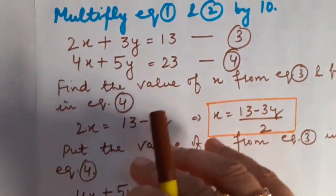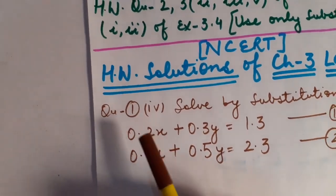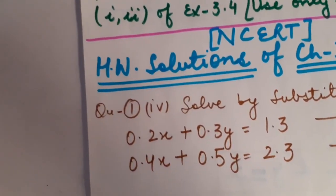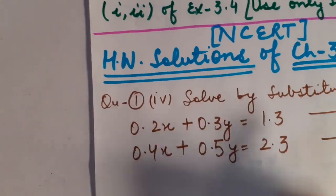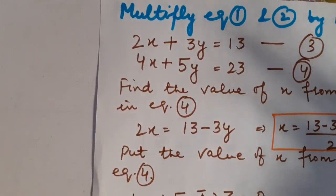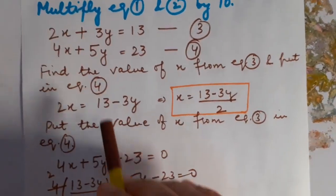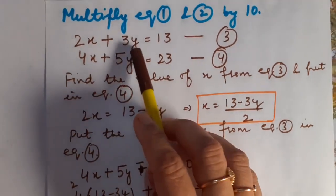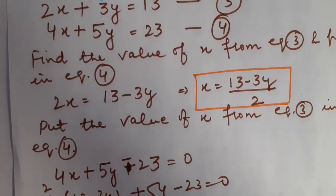These are two linear equations. To simplify first, multiply both equations by 10 to remove the decimals. 0.2 multiplied by 10 becomes 2, so the equations become 2x plus 3y = 13 and 4x plus 5y = 23. Now they are very simple equations. For substitution method, find the value of x from equation 3: 2x = 13 minus 3y, so x = (13 minus 3y) divided by 2.